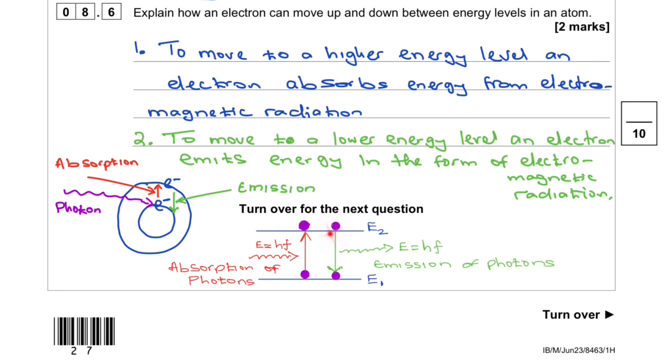And coming down, after a few seconds the electron will come down and when it comes down it will emit another photon. So this process is emission of photon and this is absorption of photons. So to move to a higher energy level, an electron absorbs energy from electromagnetic radiation which we call photon.